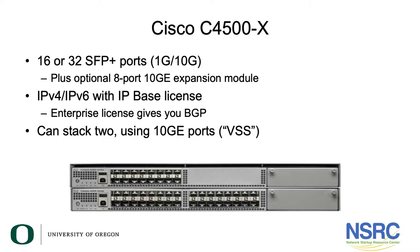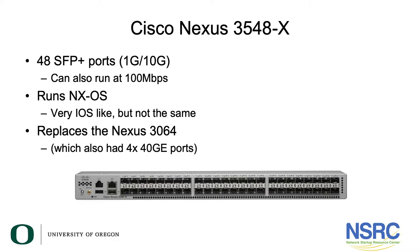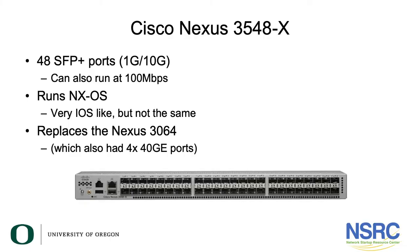You can stack two Catalyst 4500-X units together using two 10-gig Ethernet ports via something Cisco calls VSS. If you don't like either of those, you can buy the Cisco Nexus 3548X. It has the same general feature set, with 48 SFP+ ports running at 1 gig or 10 gig — and even 100 megabits for backwards compatibility, though not well-documented. It runs NX-OS rather than IOS; it looks similar but is not the same. It replaces the older Nexus 3064, which the Network Startup Resource Center has used in many campus deployments.